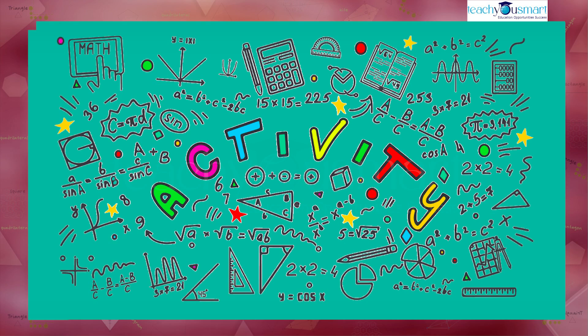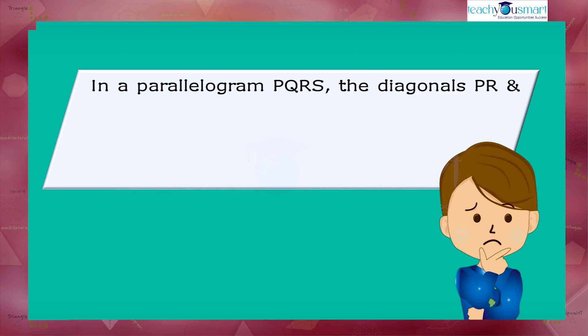Before winding up, let's check how much you understood by doing an activity. In a parallelogram PQRS, the diagonals PR and QS meet at O.